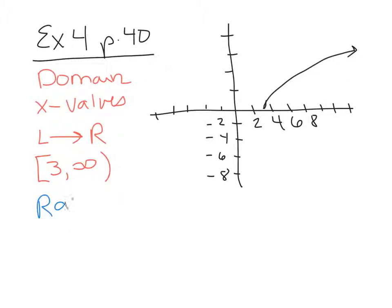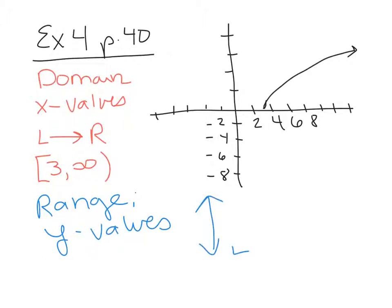The range, on the other hand, is the y values, and you look low to high — vertically. Look for the lowest point on your graph. The y value at that point is 0, matching up with 0 on the y axis. How high does the graph go? Because of the arrow, this continues to go up into infinity. So the range is [0, ∞).